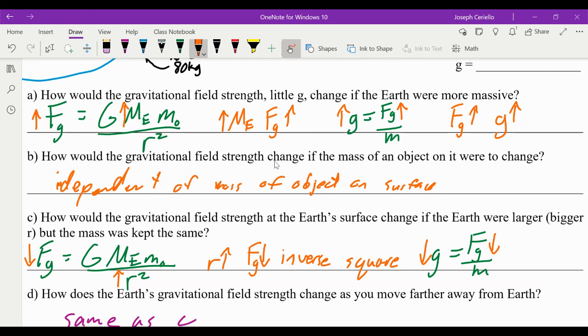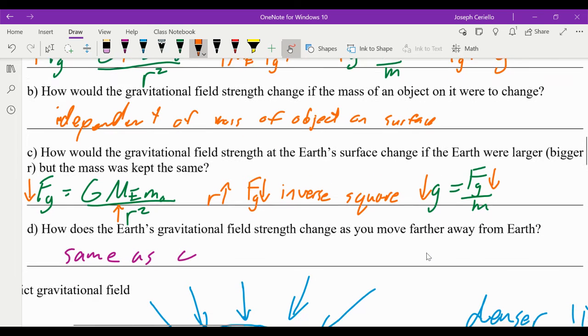So he says, how would the gravitational field strength at the Earth's surface change if the Earth were larger, meaning it had a bigger radius, but the mass were kept the same? So basically, if the Earth got bigger, but its mass didn't change. Well, if R gets bigger, Fg gets smaller. We know that inverse square relationship. As R gets bigger, Fg gets smaller. Therefore, if Fg gets smaller, we know that the gravitational field strength must get smaller as well.